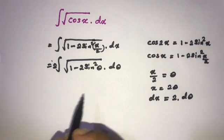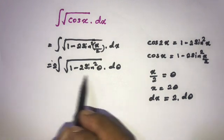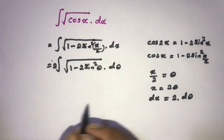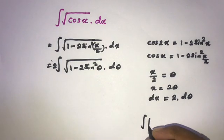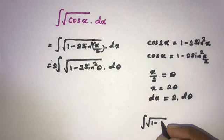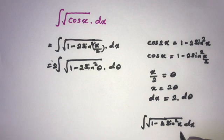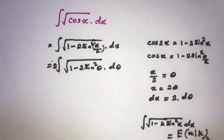This is the second kind of elliptic integral. The standard form is: the integral of the square root of 1 minus k times sine squared of x dx equals E(x, k) plus C, where E is the elliptic function of the second kind.